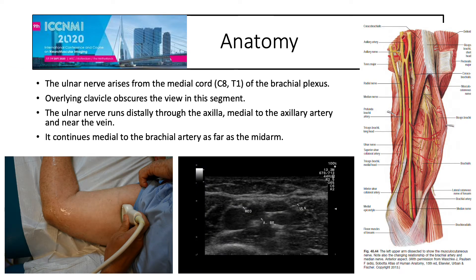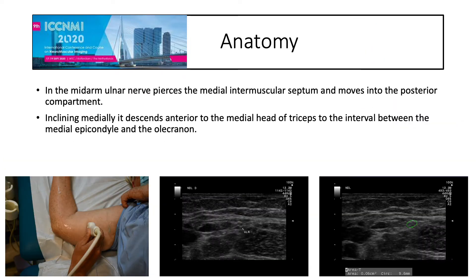The ulnar nerve arises from the medial cord C8 to T1 of the brachial plexus. The overlying clavicle obscures the view in this segment. The ulnar nerve then runs distally to the axilla, medial to the axillary artery and near the vein. It continues medial to the brachial artery as far as the mid arm. You can see the position of the probe here proximally in the arm — the structure here is the ulnar nerve, here is the brachial artery, and these are the surrounding veins.